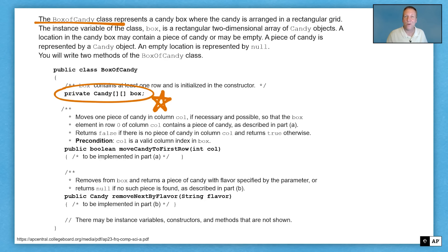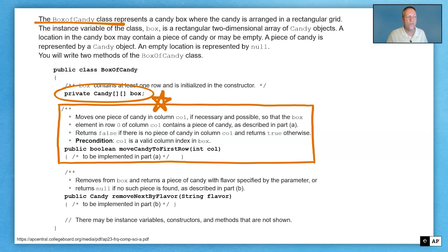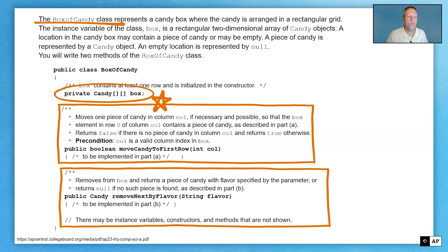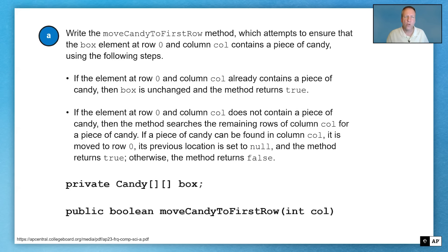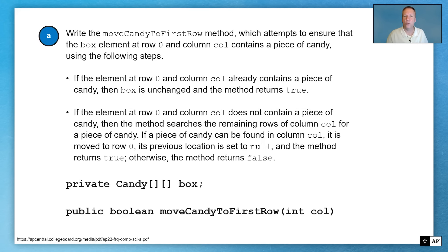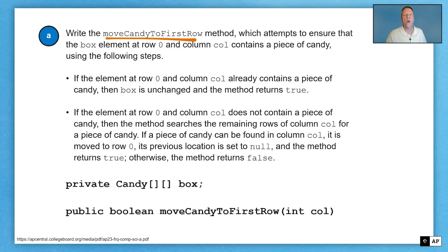We have two methods to implement here. In part A, we have the moveCandyToFirstRow method. And then we also have the removeNextByFlavor method, which we'll talk about in part B. So let's go right to part A. Part A is to write the moveCandyToFirstRow method, and it attempts to ensure that the box element at row zero and column col contains a piece of candy. We always want a piece of candy if possible in that first row of our box based on whatever column we're given.